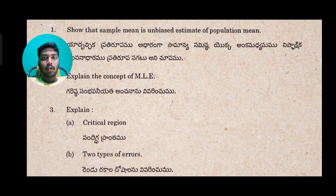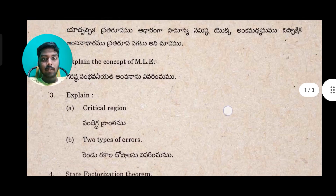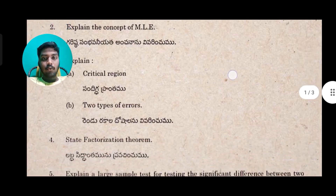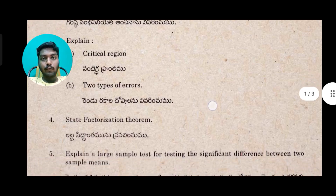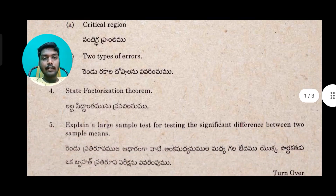Types of errors — Type 1 error and Type 2 error — is the same question in the 2018 and 2019 question papers and also the 2020 question paper. The factorization theorem has been repeated across 3 years: 2018, 2019, and 2020 question papers, making it an easy scoring topic.